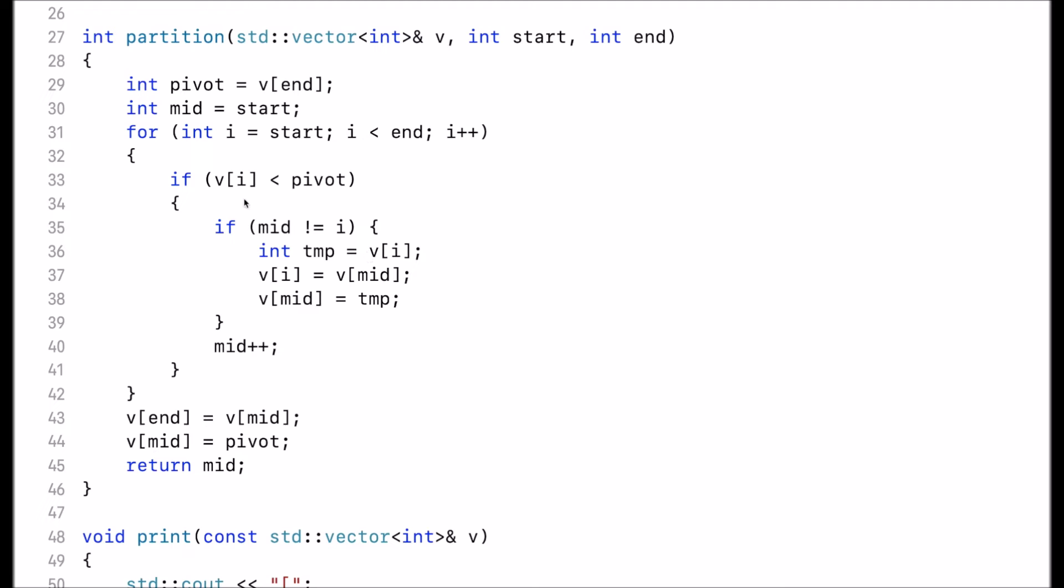In each iteration I check if the element at i is less than the pivot element. If that's the case, I check if mid and i are different. If these two indices are different, I have to perform a swap. I swap the element at i with the element at the mid index.